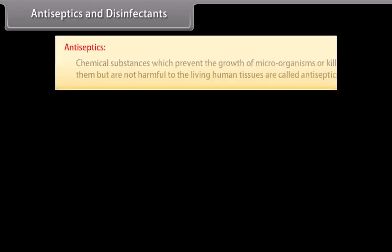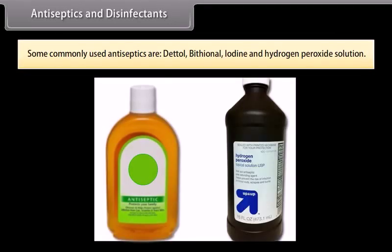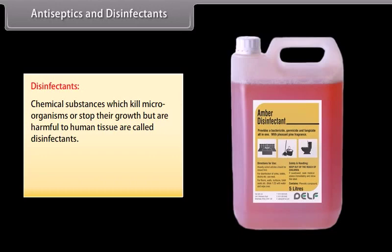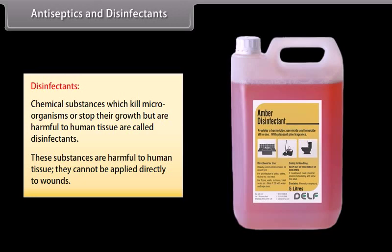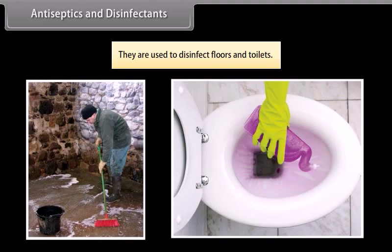Antiseptics and disinfectants. Antiseptics: chemical substances which prevent the growth of microorganisms or kill them but are not harmful to living human tissues are called antiseptics. Antiseptics are applied to living tissues such as wounds, ulcers, and diseased skin surfaces. Some commonly used antiseptics are Dettol, bithional, iodine, and hydrogen peroxide solution. Disinfectants: chemical substances which kill microorganisms or stop their growth but are harmful to human tissue. They cannot be applied directly to wounds. They are used to disinfect floors and toilets. For example, phenol, sulphur dioxide, and chlorine.